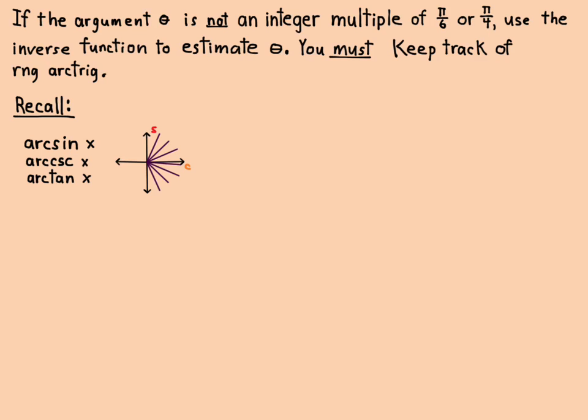So we just think of it: quadrant one or four for arc sine, arc cosecant. Remember, cosecant is the reciprocal of sine, and then arc tangent.